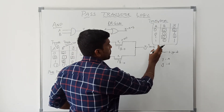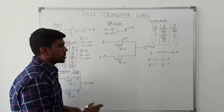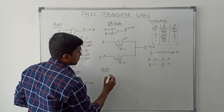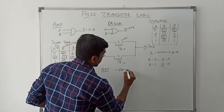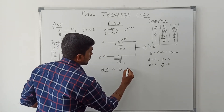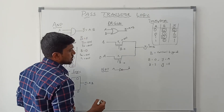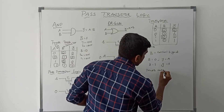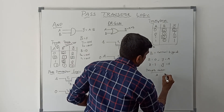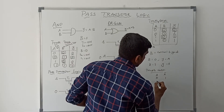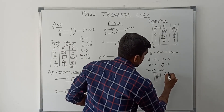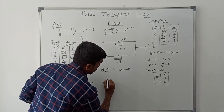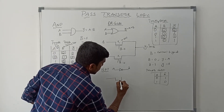Now come to the next gate — NOT operation. This is the symbol of NOT gate. A is the input value and A-bar is the output value. Truth table: A=0 gives A-bar=1, and A=1 gives A-bar=0. Now I am going to draw the pass transistor logic for NOT operation.